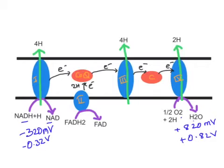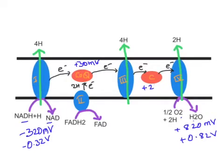NADH+H+ enters into Complex 1 because Complex 1 has a slightly more positive redox potential than NADH+H+, so NADH+H+ donates electrons to Complex 1. Complex 1 then transfers electrons to Coenzyme Q, because the redox potential of Coenzyme Q is +30 millivolts. From Coenzyme Q, electrons are donated to Complex 3, then to Cytochrome c, which has a redox potential of +230 millivolts.